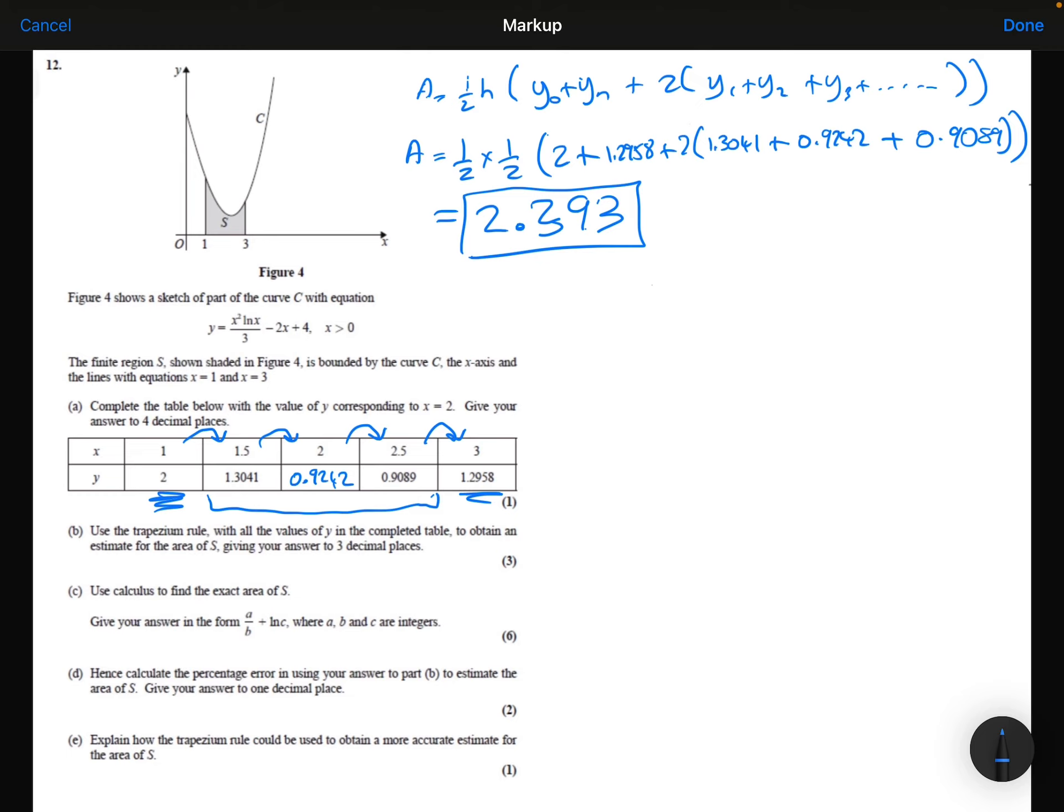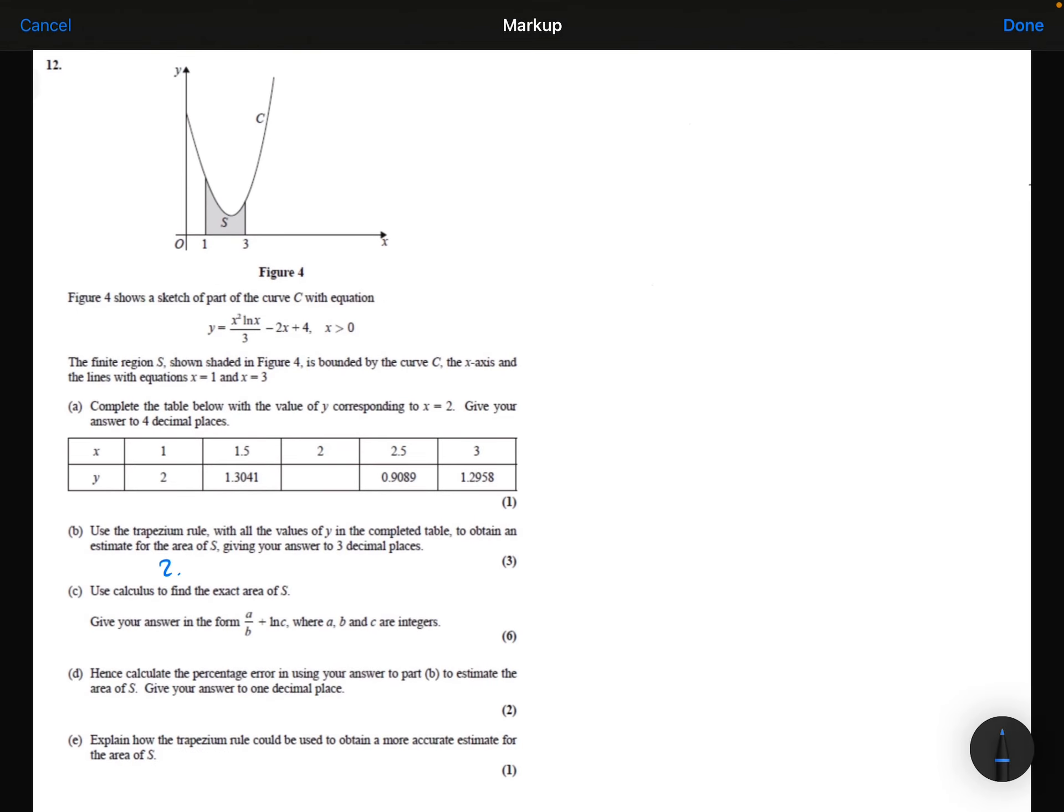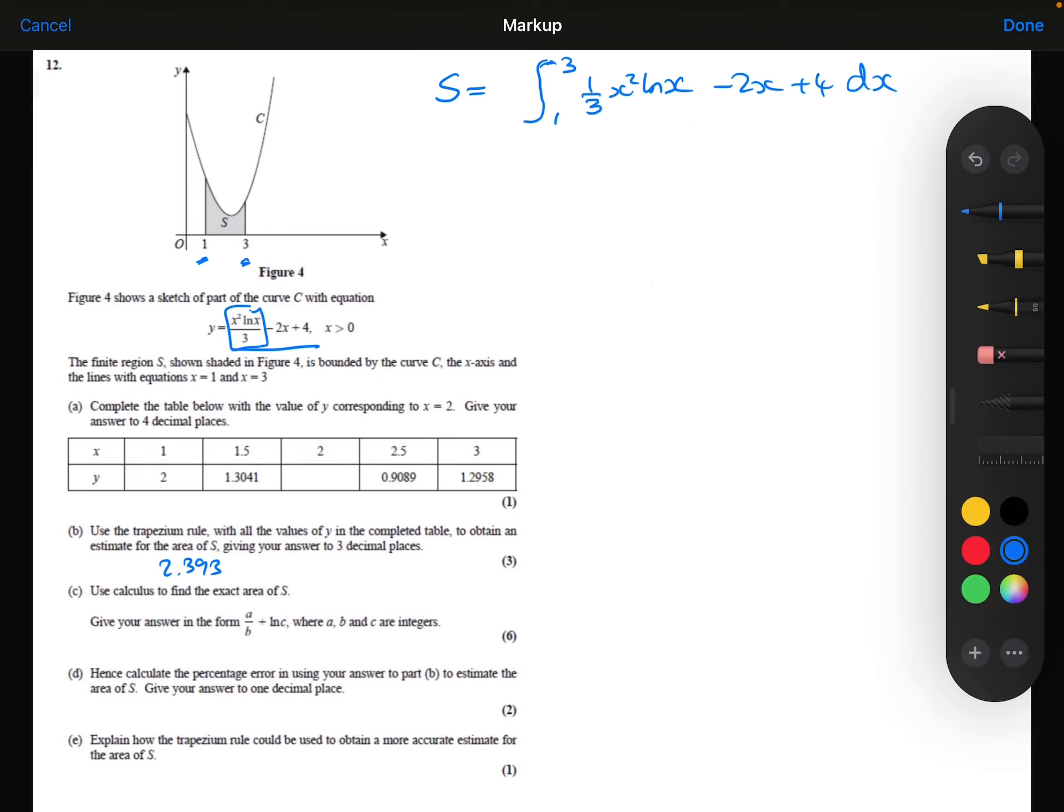Part C: Use calculus to find the exact area of S. Give your answer in the form A over B plus ln C, where A, B, and C are integers. To find the area of S using calculus, I would integrate between 1 and 3 with my function. Now to help me integrate, I'm going to write this x squared ln x over 3, I'm going to write that as 1 third x squared ln x minus 2x plus 4. Just writing it like that makes it a little bit easier for me to integrate.